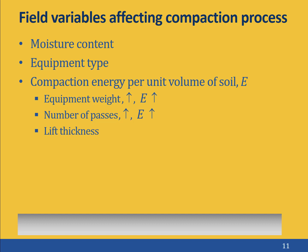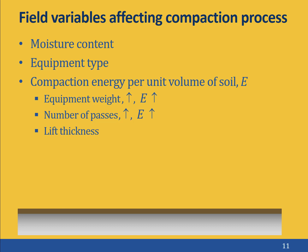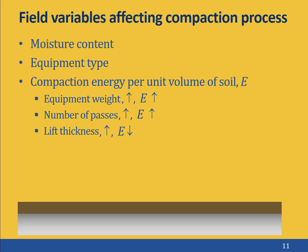The final field variable is lift thickness — the thickness of the soil layer being compacted. If the compaction equipment and number of passes are kept the same, increasing the lift thickness will decrease the compaction energy per unit volume, because the same amount of energy is spread over a larger volume of soil. In summary, the key variables in field control of compaction are: compaction moisture content, type of equipment, weight of equipment, number of passes, and lift thickness.